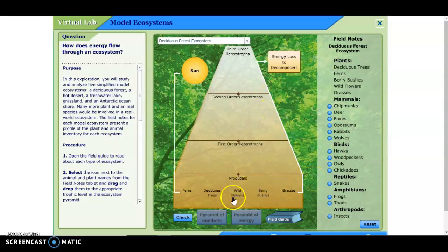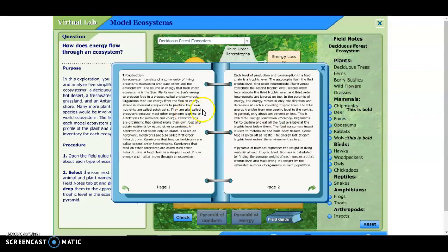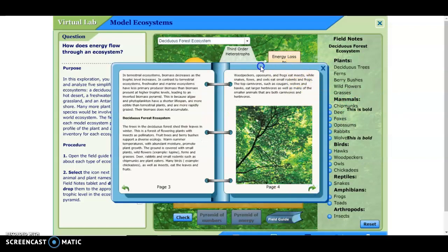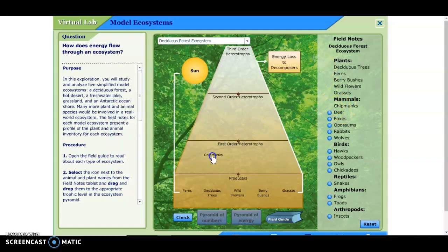All right, so now let's think about the first order heterotrophs. Again, those are the primary consumers. Those are the ones that eat the plants. So let's see. Chipmunks, right. If you don't know you can go into the field guide and look for chipmunks. Let's see. Okay, here we go. Furs and grasses. Deer, rabbits, and small rodents such as chipmunks are plant eaters. All right, so this chipmunk here is going to be a producer. And a deer. What do deer eat? That was in there too. It said deer eat them too. And rabbits.